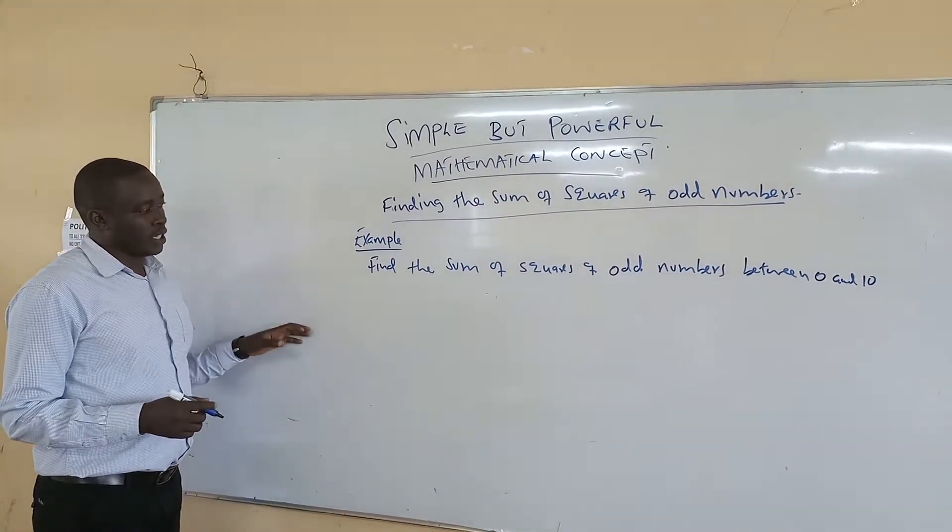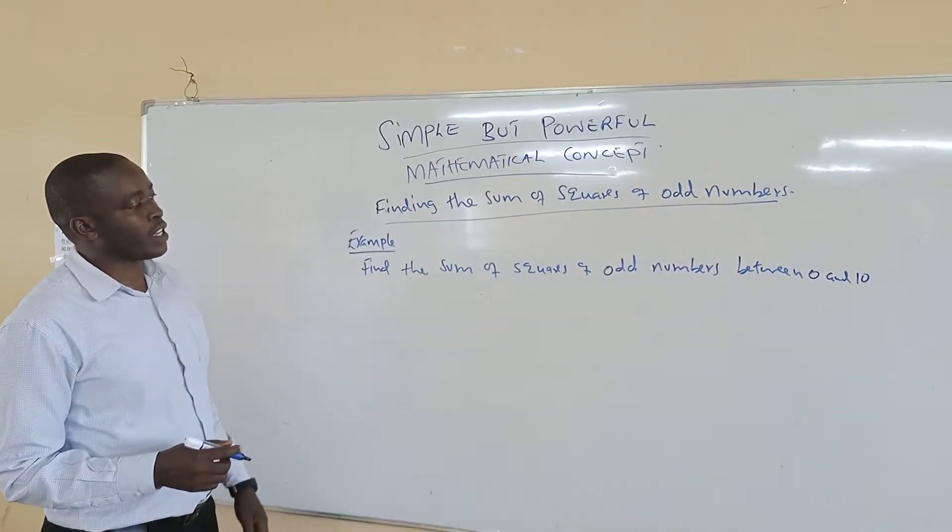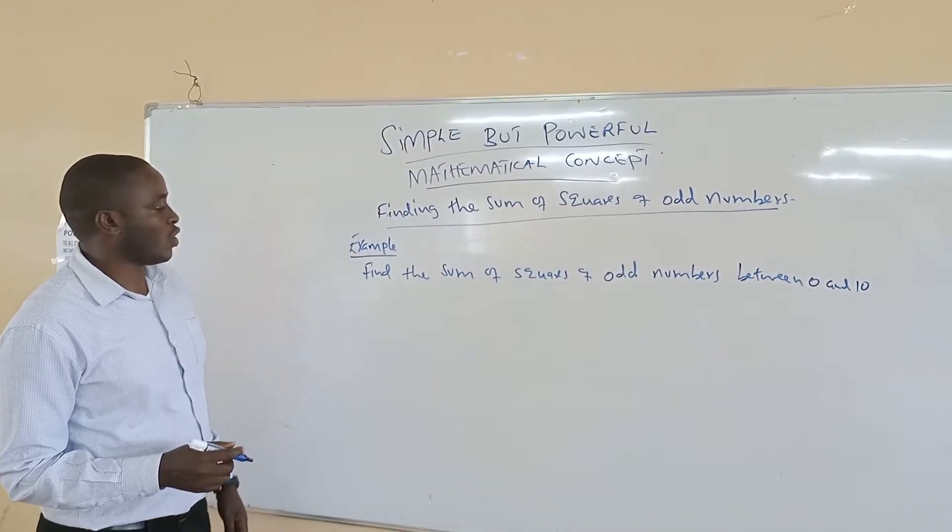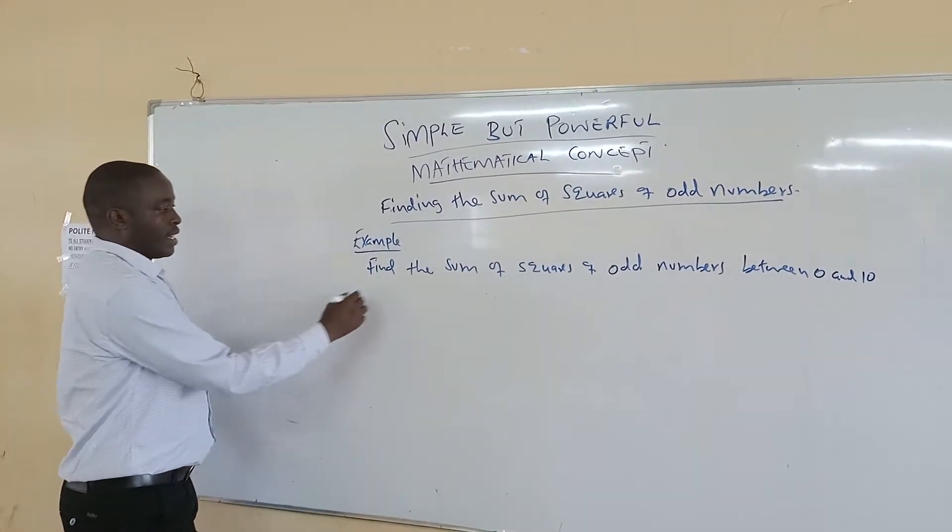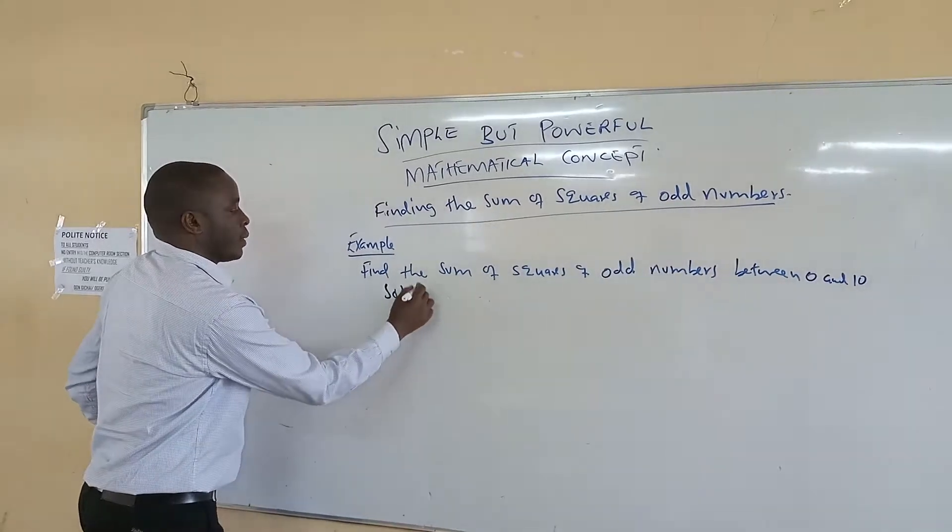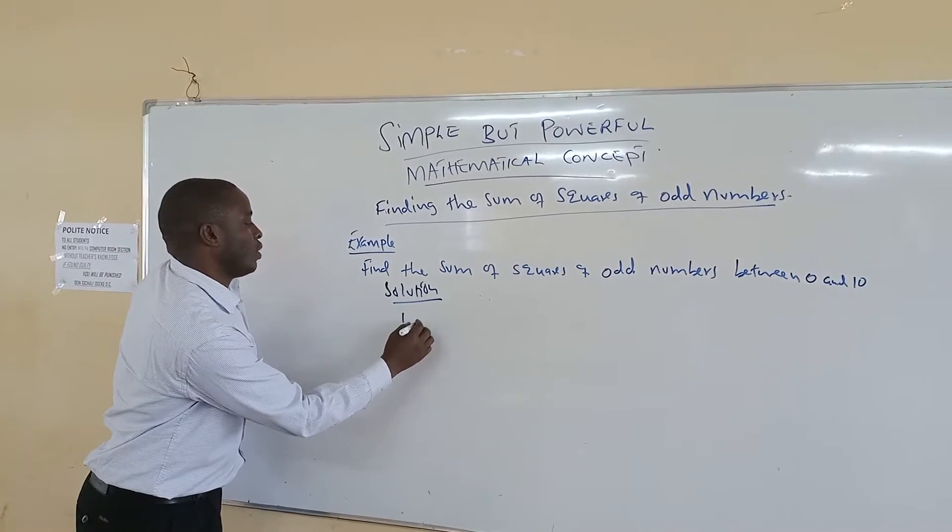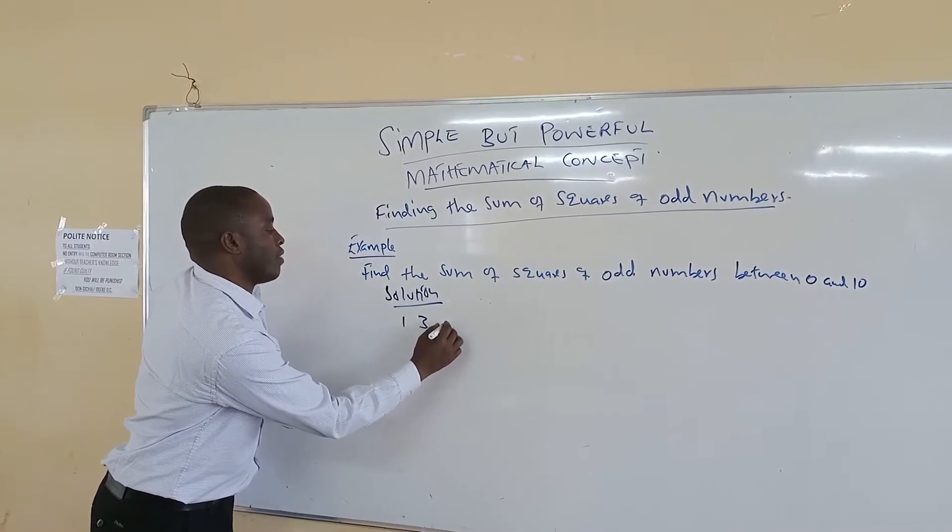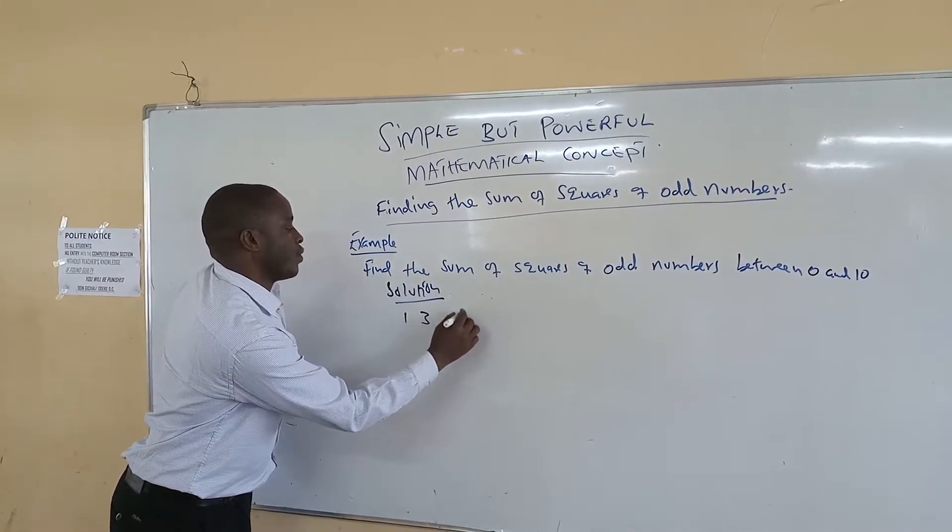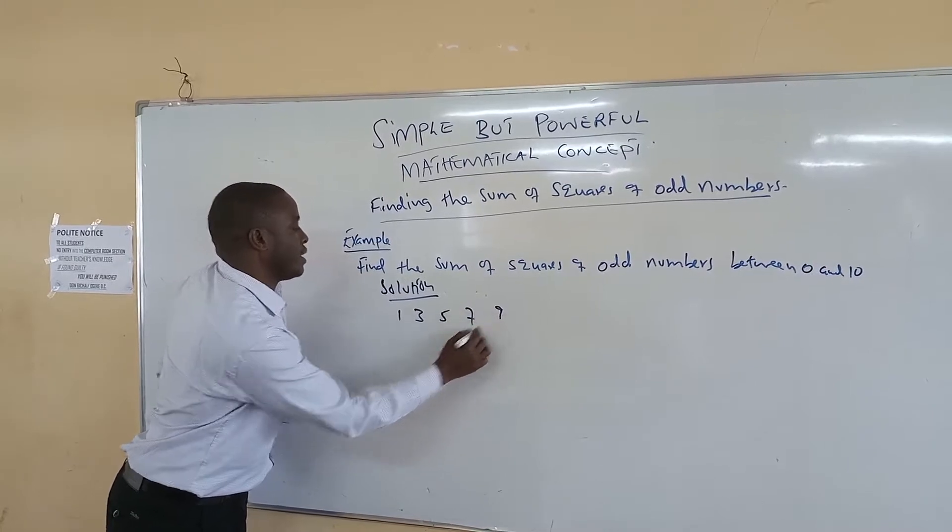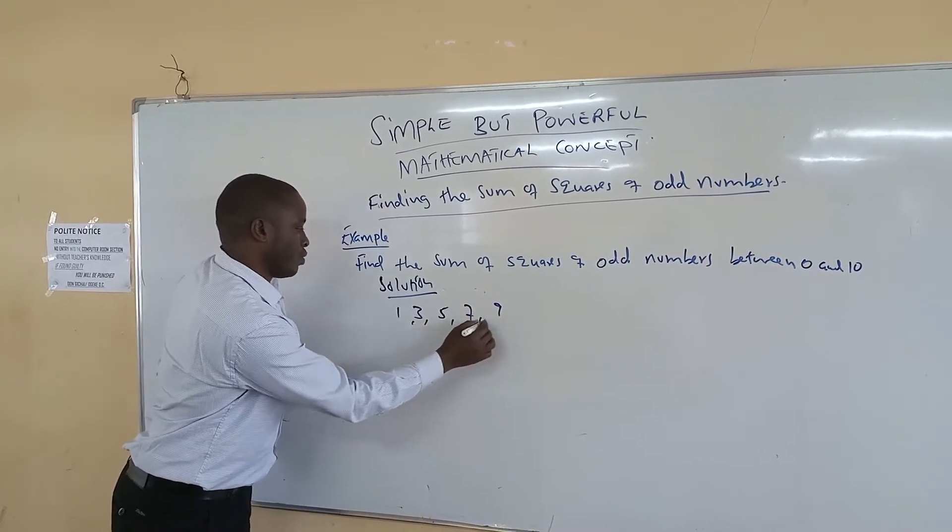An example of a question is that we find the sum of squares of odd numbers between 0 and 10. We understand that the odd numbers we have between 0 and 10 are 1, 3, 5, 7, and 9. These are the odd numbers between 0 and 10.